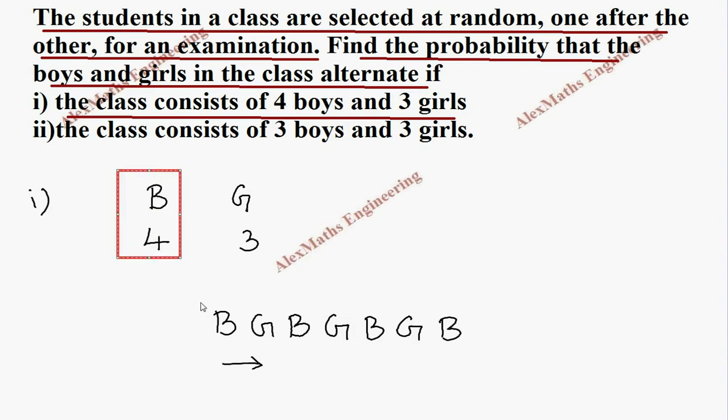Here we start with the larger one so that continuously we get alternate boy, girl, boy, girl, boy, girl, and then we have boy. Suppose if we start the girl, we select the girl first, then we will select boy, then we select girl, then boy, then girl, then boy.